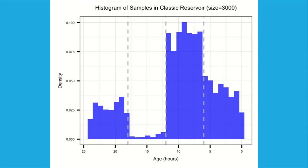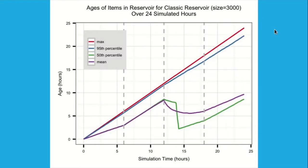For all the algorithms I'll be showing today, we ran this simulation: over 24 simulated hours, divided into four six-hour periods, with new simulated events coming in at rates of 10 events per second, one event per second, 30, and 15 events per second. This chart shows that reservoir sampling is doing exactly what it promises — giving us an unbiased sample over all events. It's kind of like a histogram through time, with the red line showing the age of the oldest event in the reservoir, which is increasing almost linearly.